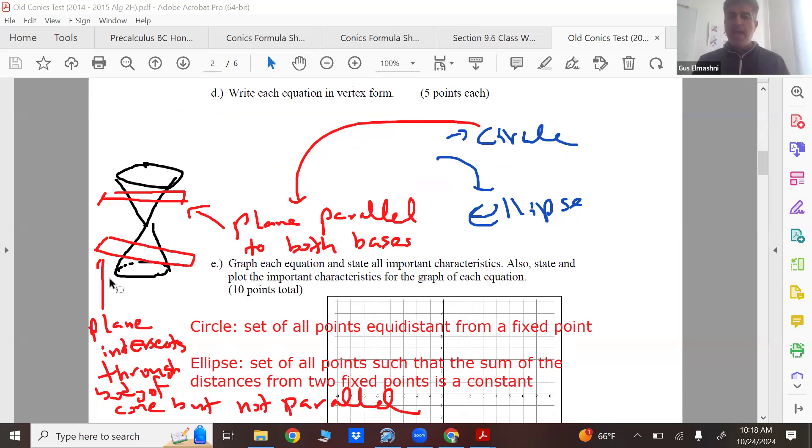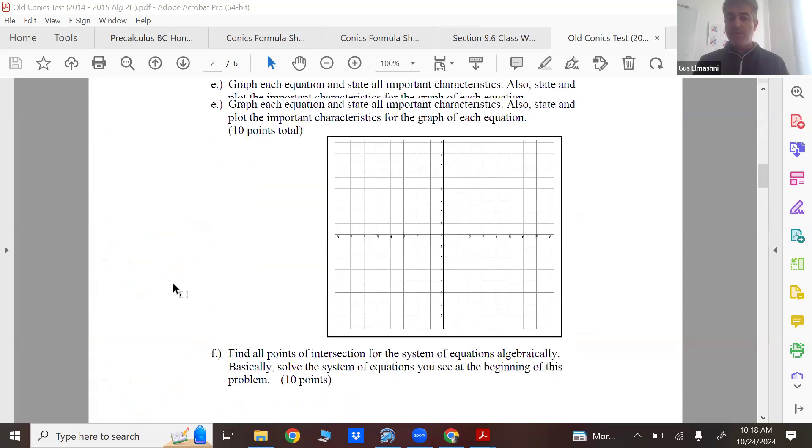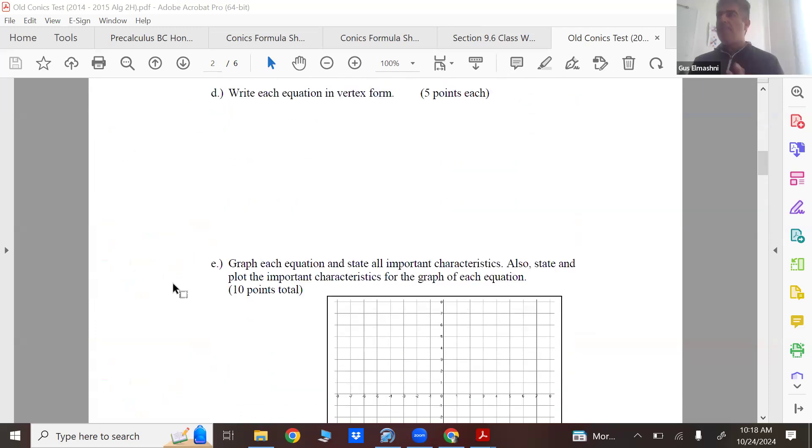And then let's actually graph them and then let's actually find the points of intersection. After I finish this problem then you guys can use the rest of the class to work and also do the homework quiz in the last 10 minutes. So how do I write this in standard form?